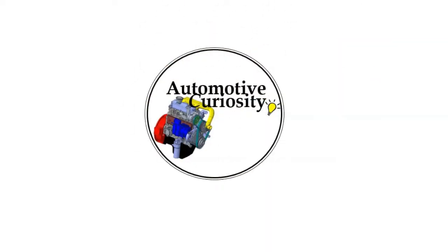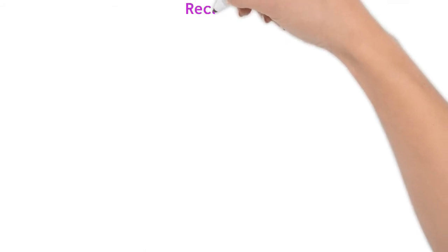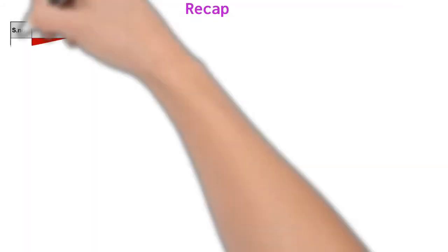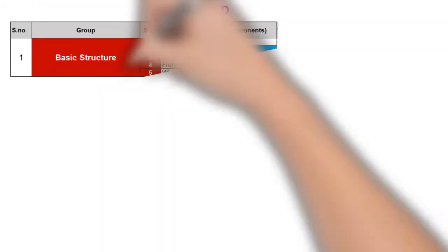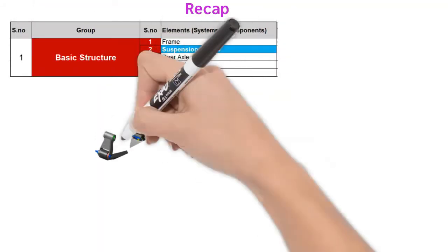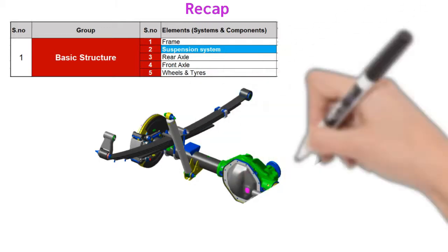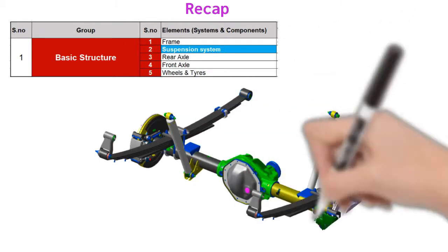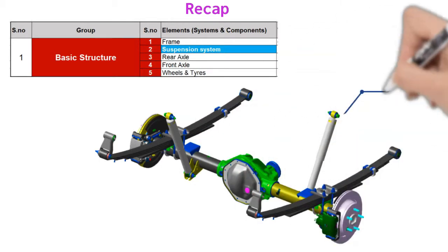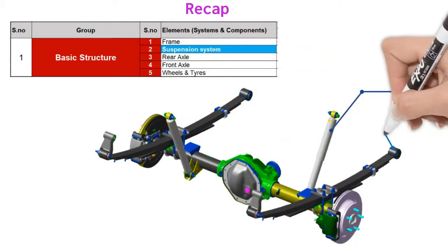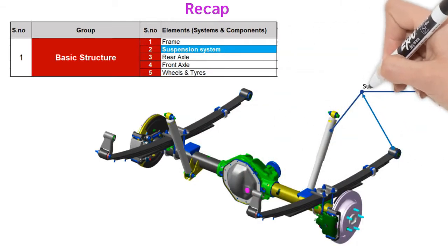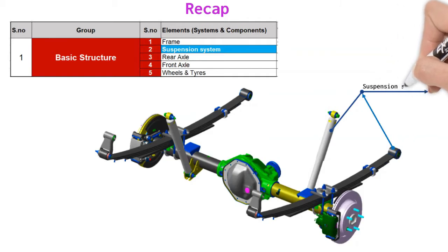Hello everyone, welcome to my channel Automotive Curiosity. In our previous video we talked about the first element of vehicle basic structure. Today we will be discussing the second element of vehicle basic structure, which is the suspension system.